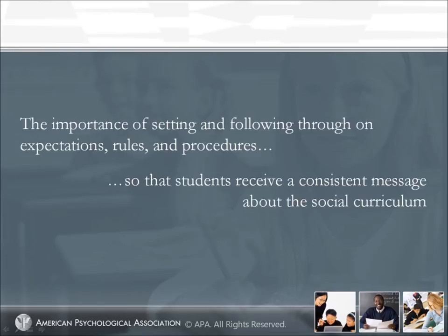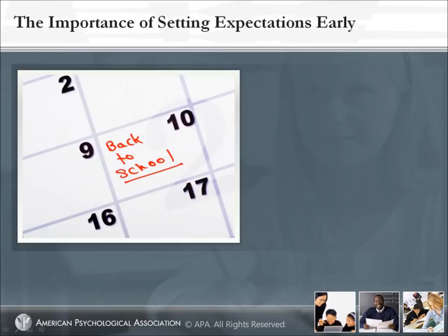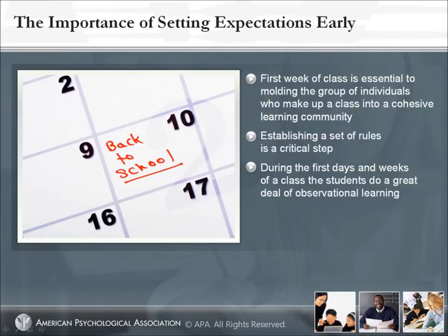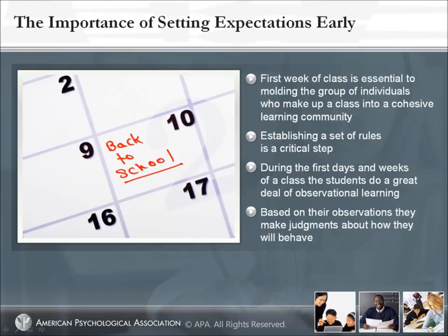The importance of setting expectations early. Wong emphasizes the importance for teachers to establish expectations for students in the classroom, especially at the beginning of the year. The first week of class is essential to molding the group of individuals who make up a class into a cohesive learning community. Establishing a set of rules is a critical step toward creating a classroom where students respect each other and pursue learning. During the first days and weeks of class, students do a great deal of observational learning — watching how the teacher responds to students, learning what the teacher pays attention to and what is ignored — and based on their observations, they make judgments about how they will behave.